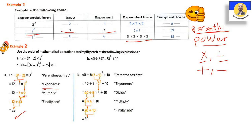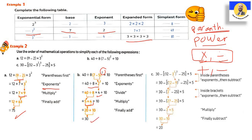Letter B: 40 ÷ 8 × (7 - 5)² + 10. أول حاجة الـParentheses: 7 - 5 = 2. وعليها Power 2، فنعملها الأول: 2² = 4. بعدين الـDivide جاءت الأول: 40 ÷ 8 = 5. بعدين 5 × 4 = 20. وبعدين 20 + 10 = 30.